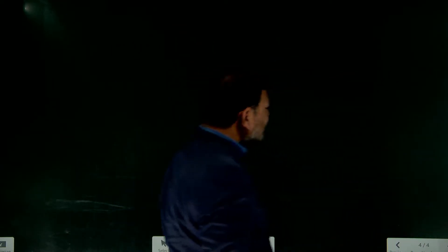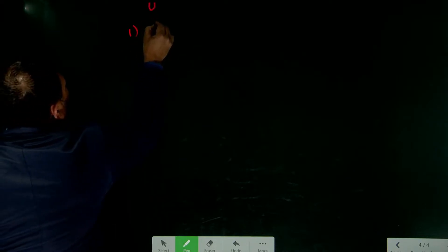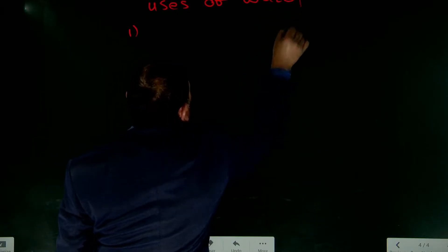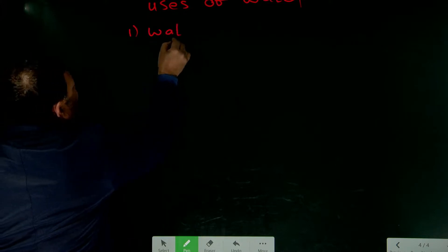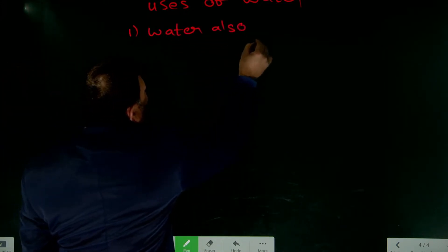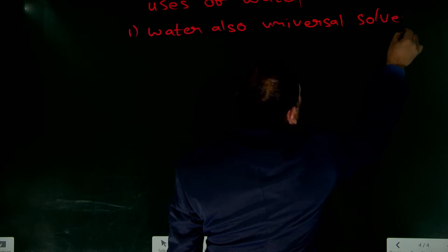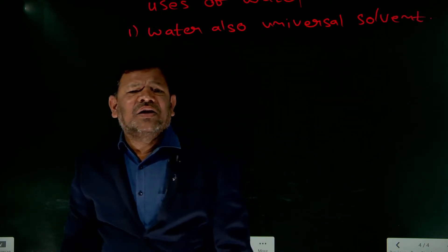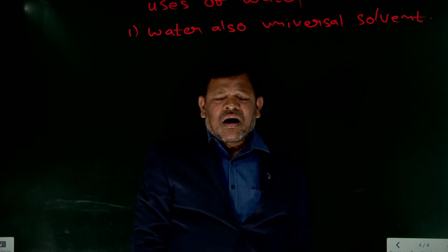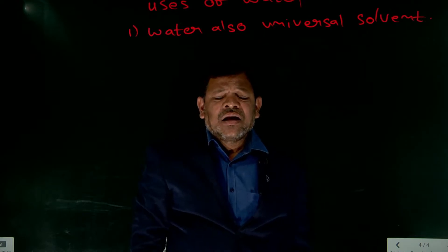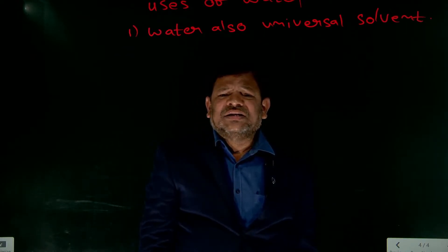What are the uses of water in our body? Water is also known as the universal solvent. Because all things are dissolved in it, that is why water is called the universal solvent.